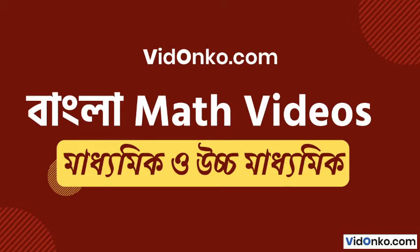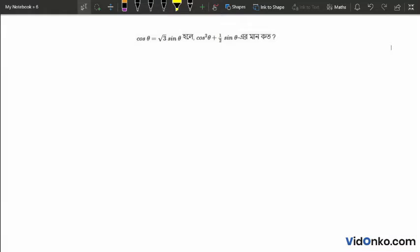Welcome to video.com. I'm going to show you how to solve this problem. The equation is: if cos theta equals root 3 into sin theta, then find the value of cos square theta plus half sin theta. We have cos theta equals to root 3 into sin theta.